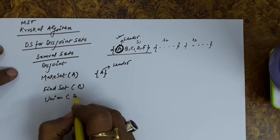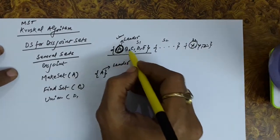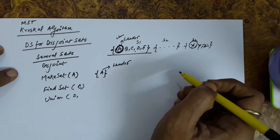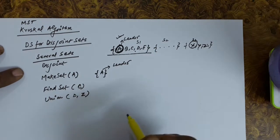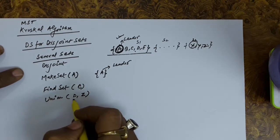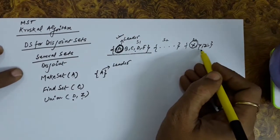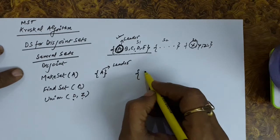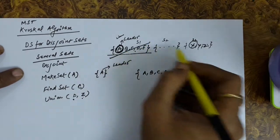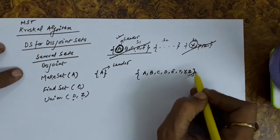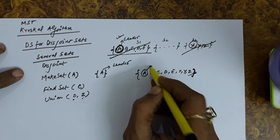There is also a union operation. Suppose we have two sets {A, B, C, D, E} and {X, Y, Z}. Performing union(D, Z) will locate D in the first set and Z in the second set, then unite these two sets into one set {A, B, C, D, E, X, Y, Z}. It will then destroy the two original sets and create the union set.